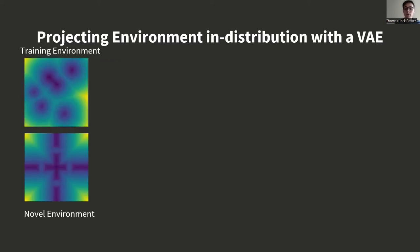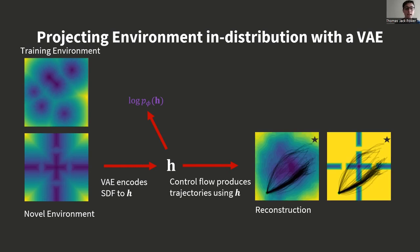However, we don't want to project the environment arbitrarily towards the training distribution. We would still like to encode relevant features of the environment. So we encode the environment with the VAE encoder. We then evaluate our OOD score for H. We use H to generate trajectories, unsurprisingly many in collision.